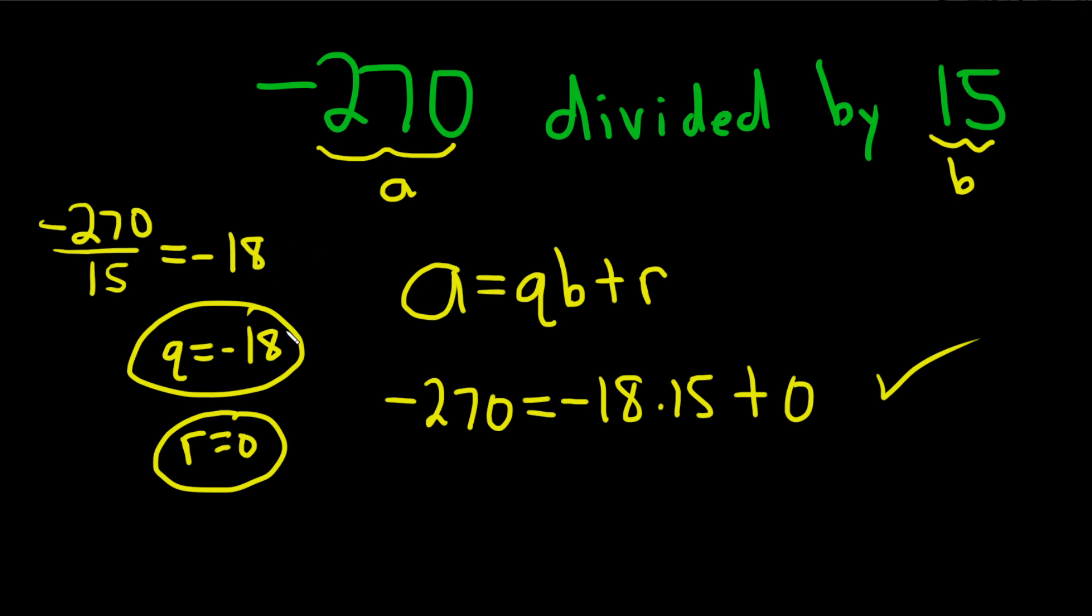So if you get a whole number here, that's your answer. That's your quotient, and then the remainder is always zero. I hope this video has been helpful.